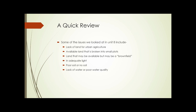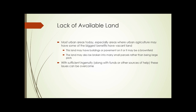Here's a quick review. Some of the issues from Unit 8 include the lack of land available for urban agriculture, land available but broken into small plots, land that may be available but is a brownfield, issues of adequate light, poor soil or no soil, and lack of water or poor water quality. Most urban areas today, especially where urban agriculture could have the biggest benefits, do have vacant land, though it may have buildings or pavement on it, or be a brownfield, or broken into small parcels. But with sufficient ingenuity and some funds or other help, most of these issues can be overcome.